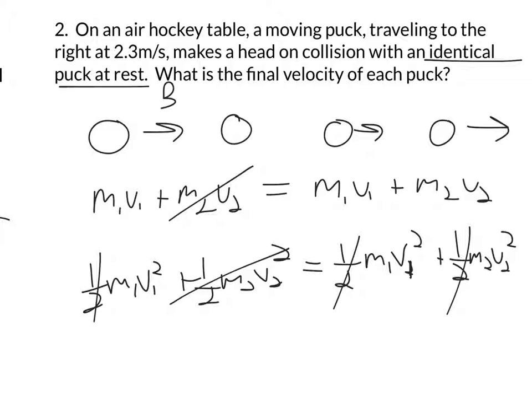A couple things that make this easier is that this guy is not moving beforehand. So we can just drop those factors out. We can also divide out the half. That will go away, which will make this a little easier. And something even better. I totally missed this the first time. They are identical pucks. That makes this easy because I can divide the mass out, because all the masses are the same, M1 and M2. This really becomes a lot easier.